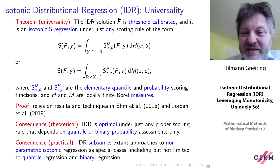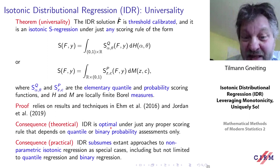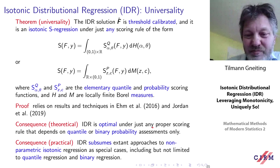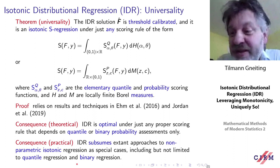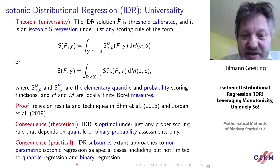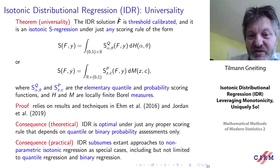The paper refers to results and techniques from the formal CRPS discussion paper and the preprint by Alexander Jordan et al. The consequences: IDR is optimal under just any proper scoring rule that depends on quantile or binary probability assessments only. The methodological consequence is that IDR subsumes extant approaches to non-parametric isotonic regression, including but not limited to quantile regression and binary regression. There is a sizable literature on non-parametric isotonic quantile regression and binary regression, and all of this is a special case of our concept of S regression and CRPS regression.